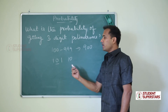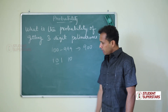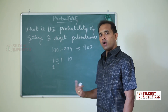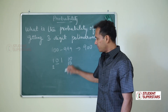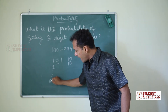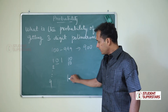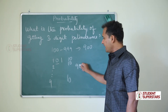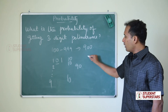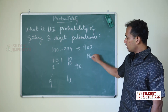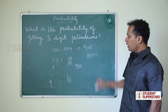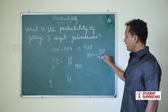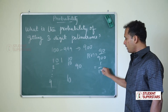Similarly, for first and last digit being 2, there are 10 possibilities, and so on up to 9. So for digits 1 to 9, there are 9 × 10 = 90 palindromes in total. Probability is number of events by number of samples: 90 by 900, which simplifies to 1 by 10.